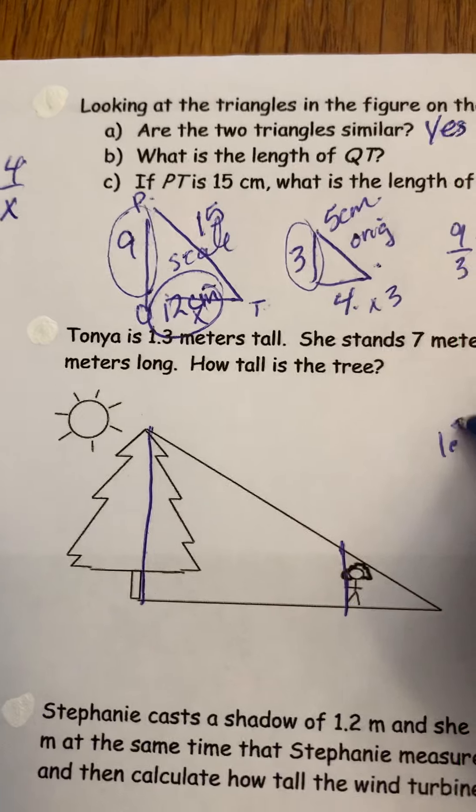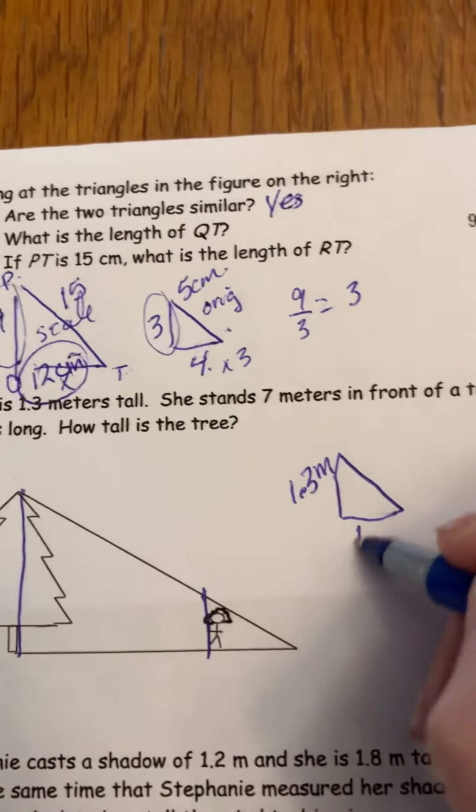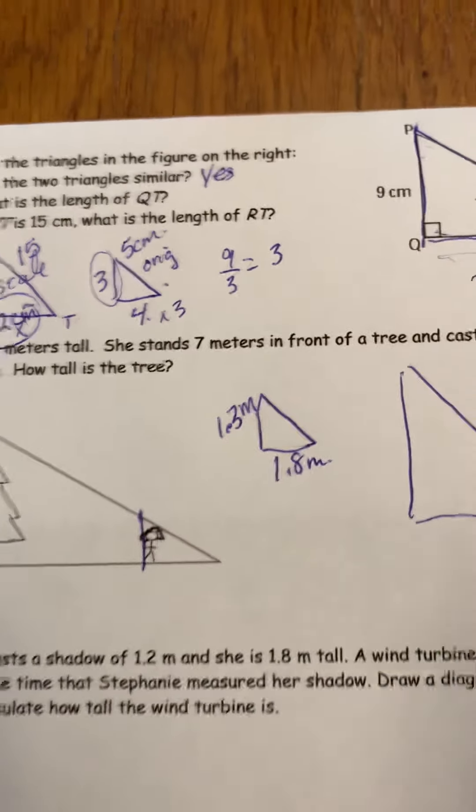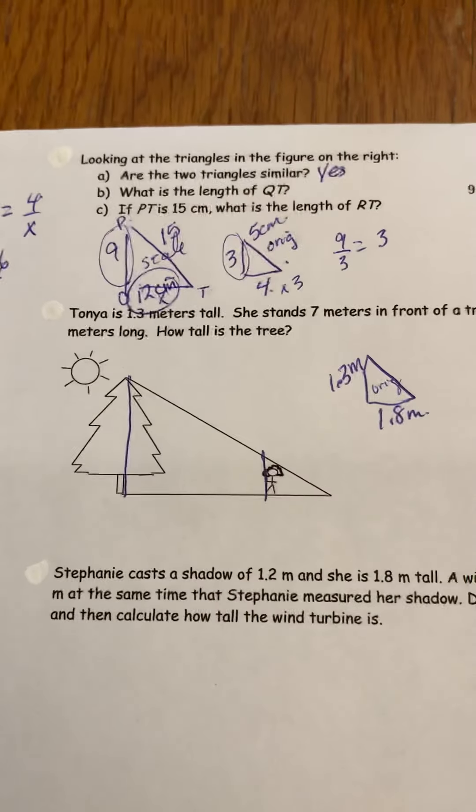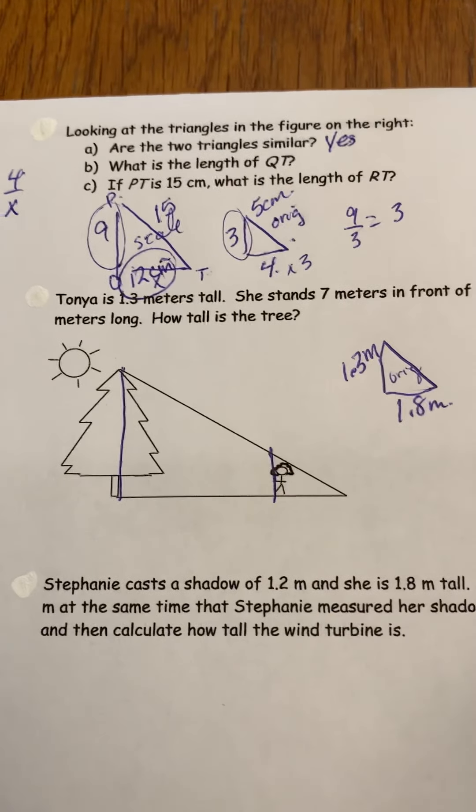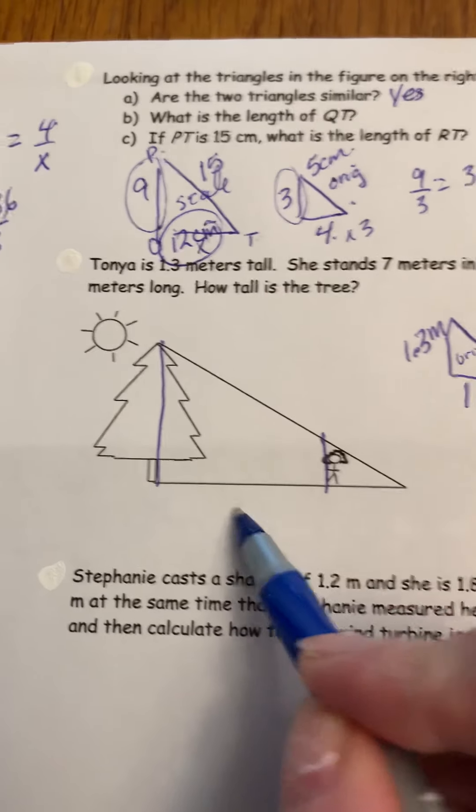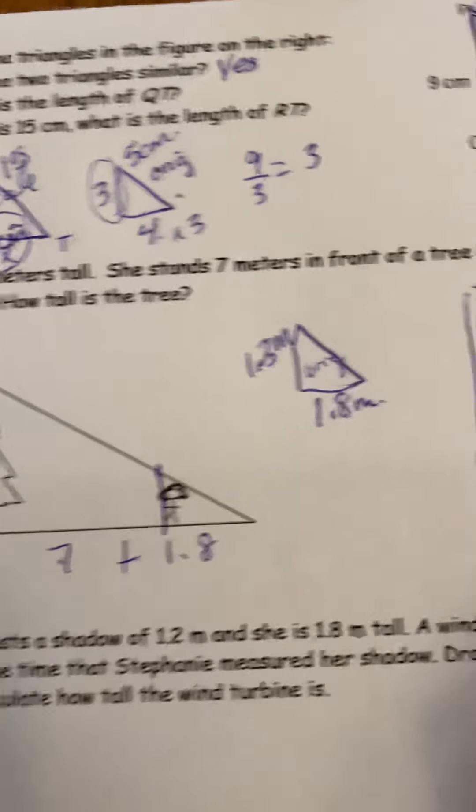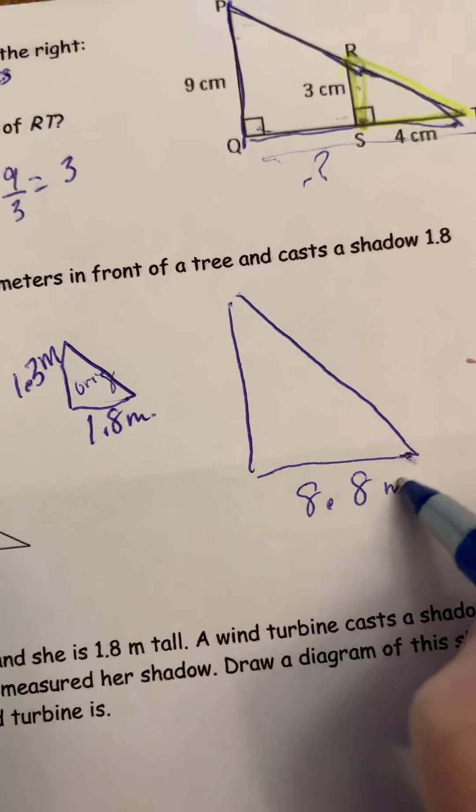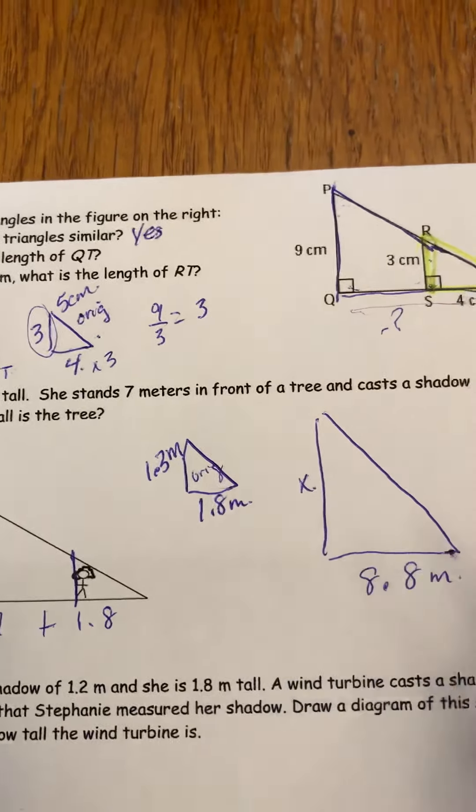Okay, now we know that Tanya is 1.3 meters tall, sorry, I should be saying one and three tenths, and she casts a shadow that's one and eight tenths of a meter. So we have measurements on this one, so I'm going to call that the original. And now you might say to me, but we have no measurements for the other one, but we do, because if you read she's standing seven meters in front here, so there's seven plus the one and eight tenths of a meter, so this measurement here is eight and eight tenths of a meter.